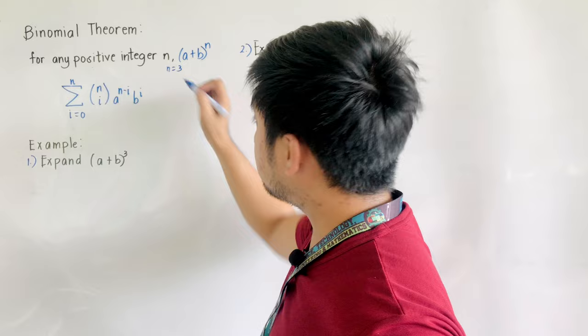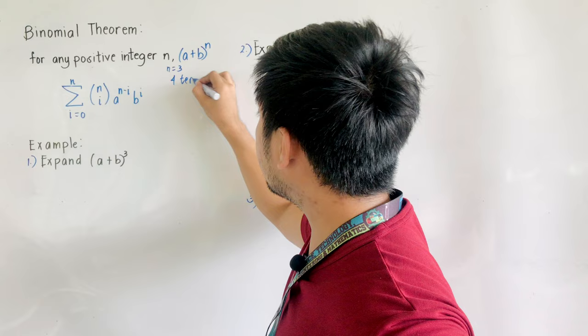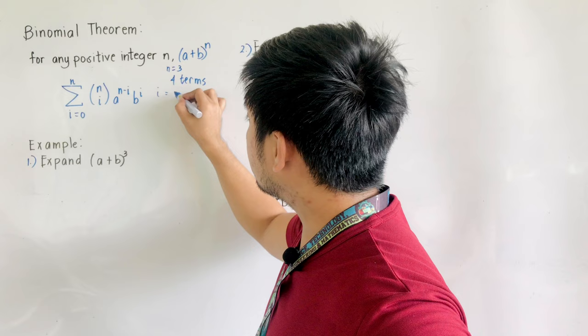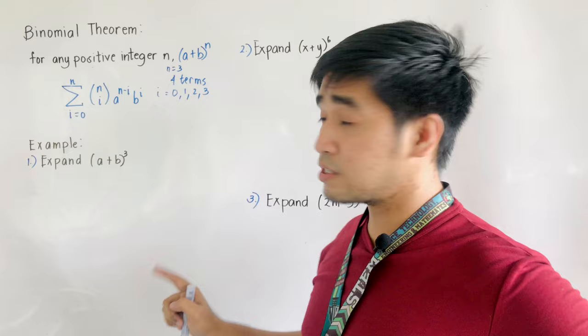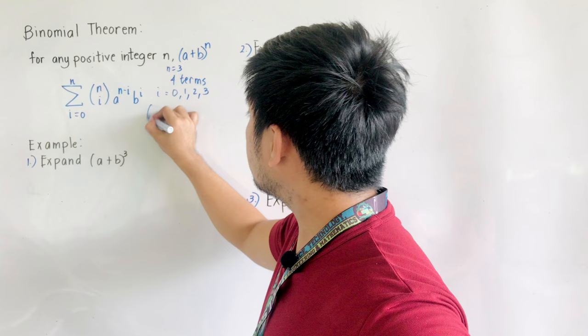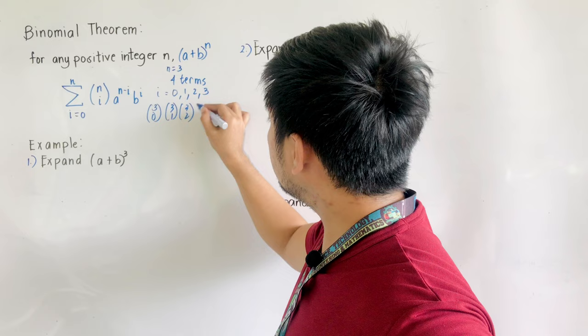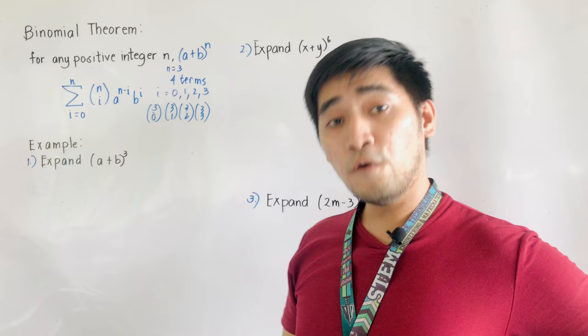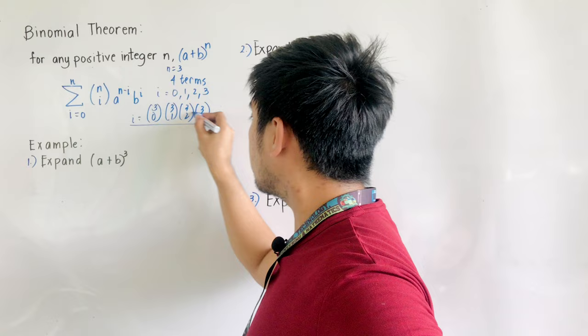For example, if n is equal to 3, there will be four terms. The values of i are zero, one, two, and three — that gives us four terms. In combination notation, that is C(3,0), C(3,1), C(3,2), and C(3,3), giving us four terms. All the values below in the combination are the values of i.